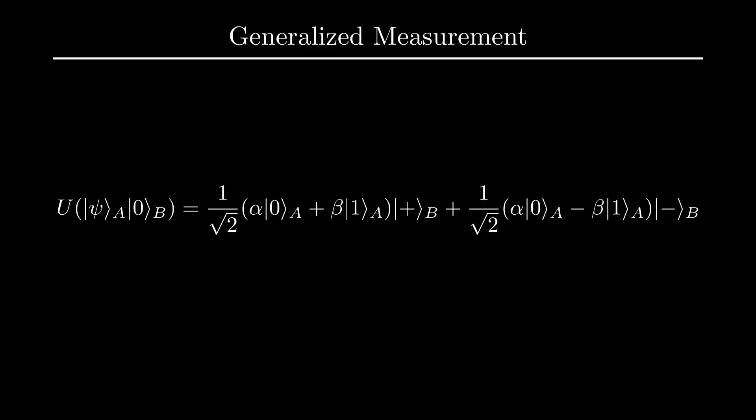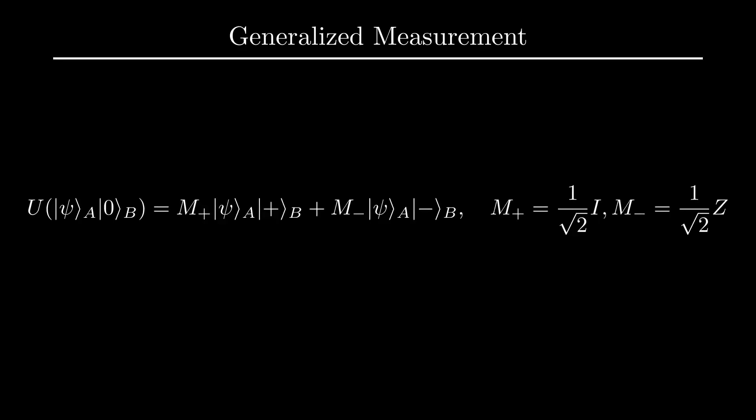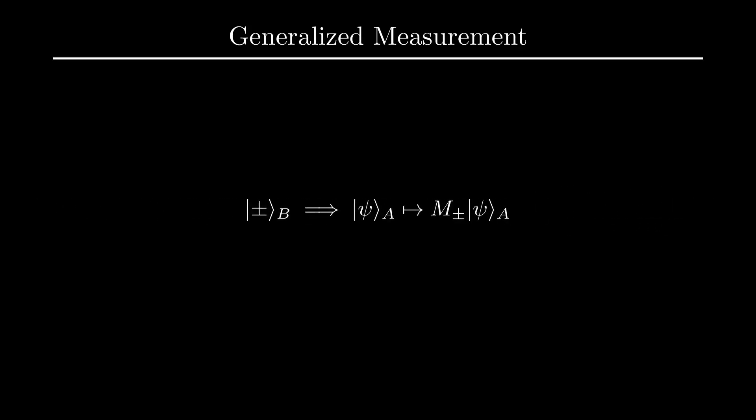We will define this mapping that we performed as operator U. In other words, U acting on psi tensored with 0 gives us alpha*0 plus beta*1 over square root 2 tensored with 0 plus alpha*0 minus beta*1 over square root 2 tensored with 1. Writing this in terms of psi and operators, we can rewrite the expressions for qubit A as M_plus acting on psi and M_minus acting on psi respectively, where M_plus is simply 1 over root 2 times the identity operator and M_minus is 1 over root 2 times the Pauli-Z operator. Within this framework, we are essentially saying that measuring either plus or minus for B gives us M_plus or M_minus psi up to a normalization factor.